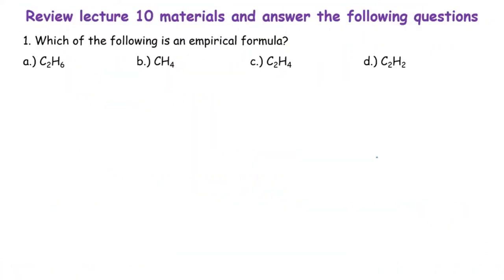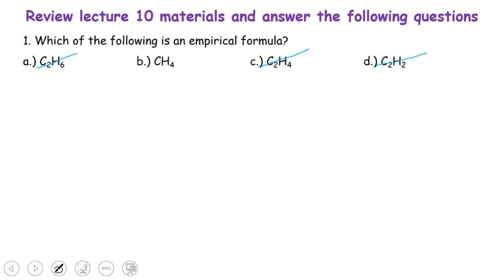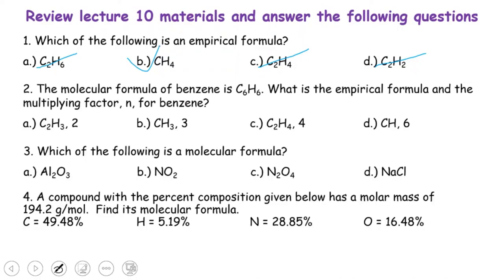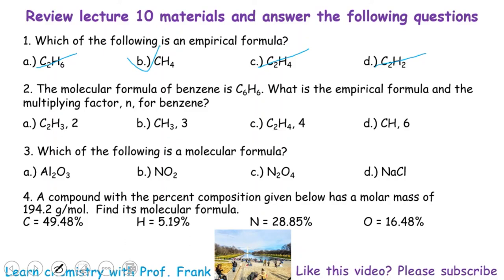This is the end of Lecture 10 quiz questions. Question 1: which of the following is an empirical formula? Option A is not in its smallest whole number ratio, so it's out. Option B, CH4, is in the smallest whole number ratio — keep it. Option C, C2H4, can be divided by 2, so it's out. Option D, C2H2, can also be divided by 2, so it's out. Therefore B is the correct answer. Work on all the remaining problems and additional homework problems from other sources.